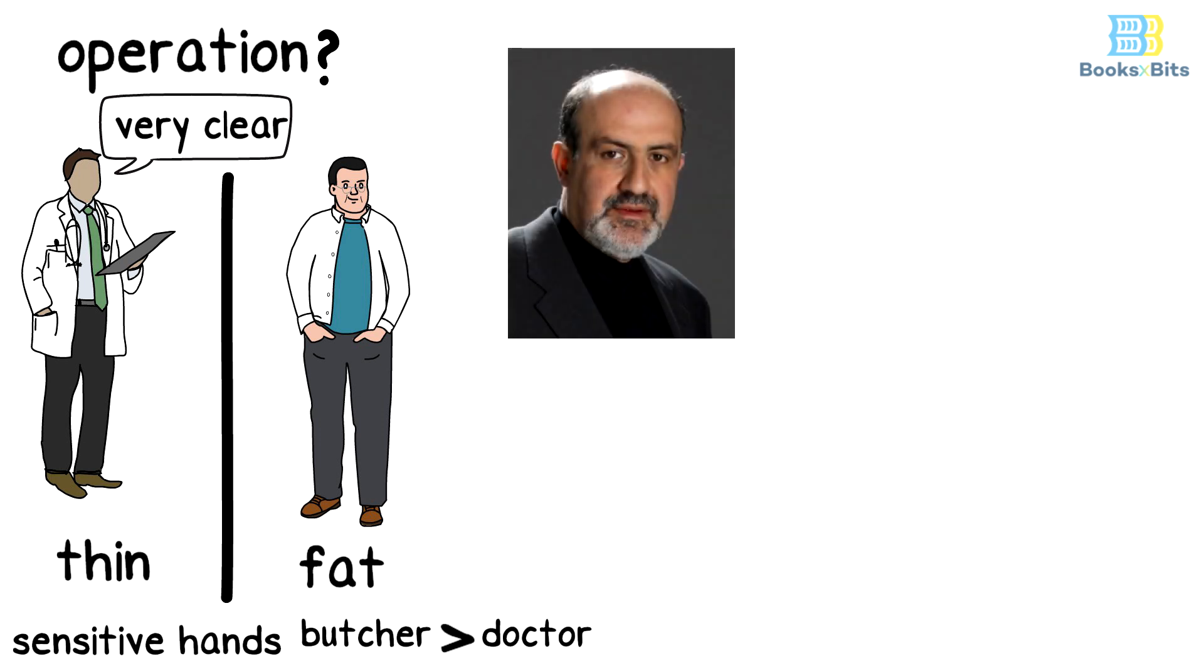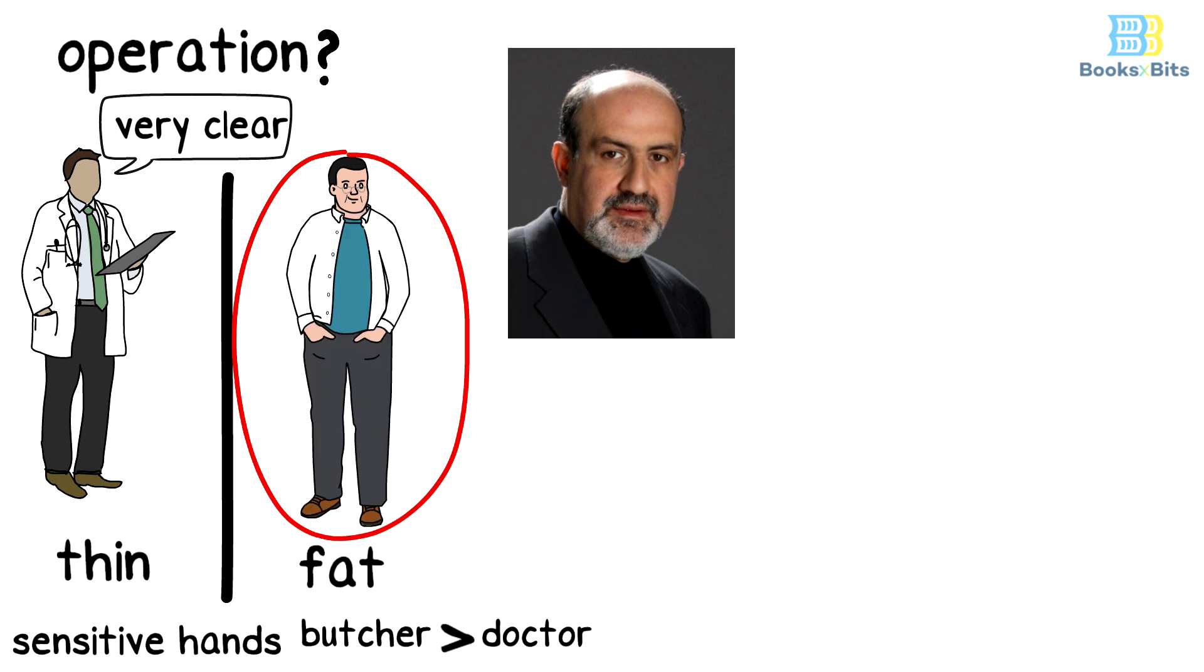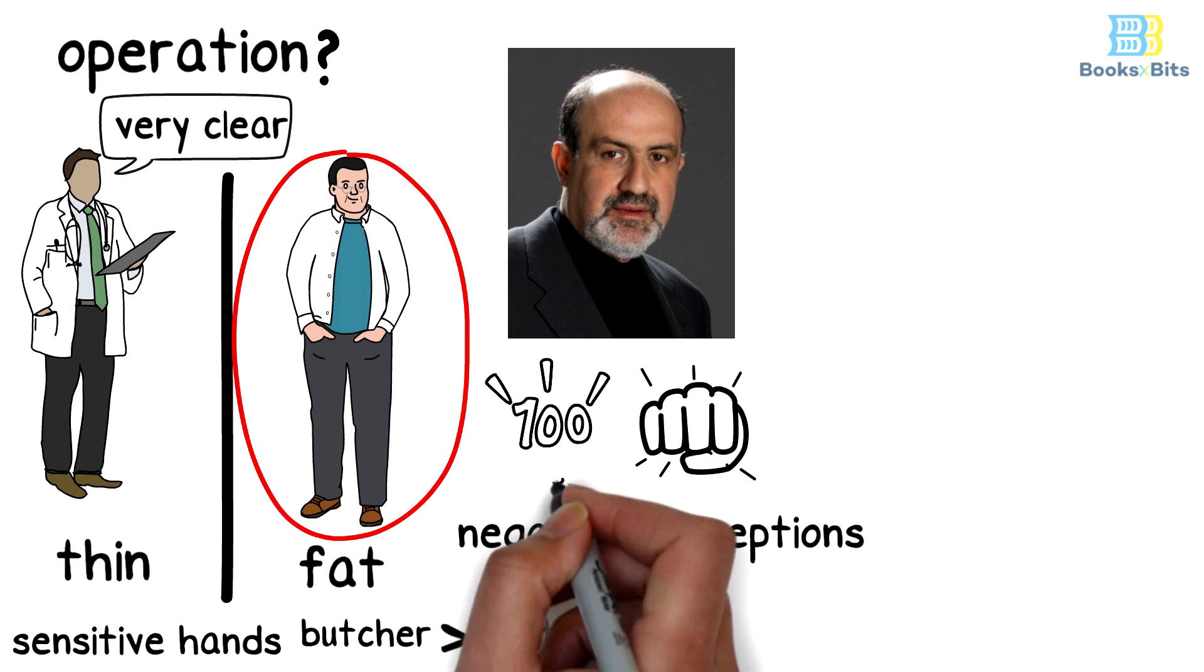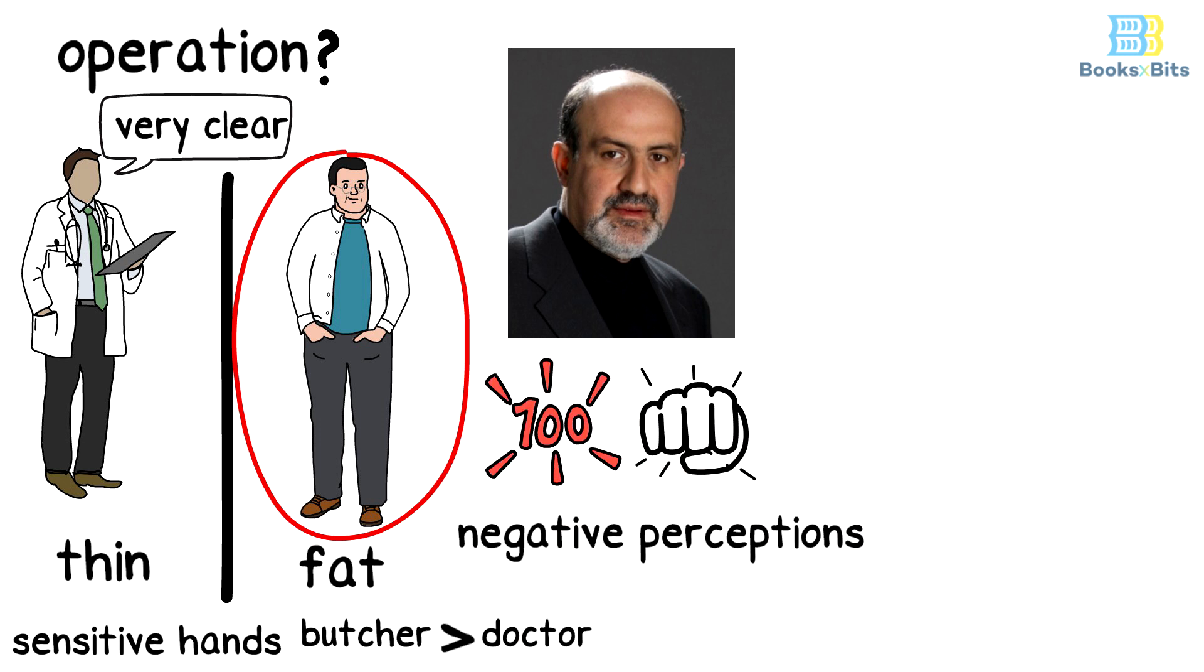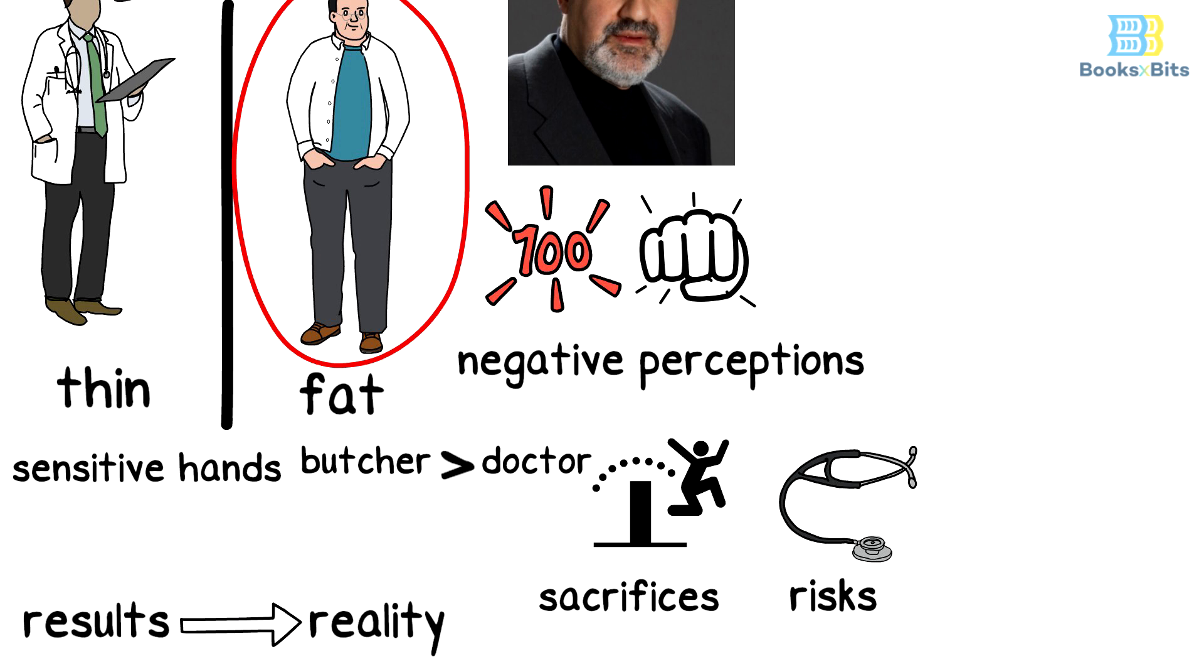The writer Nassim Talib says he will choose the second surgeon. Despite his unfamiliar appearance, he certainly had to overcome a lot of negative perceptions in order to succeed in his career. Perhaps he had to overcome many obstacles to prove himself, unlike a surgeon who looks more like a familiar surgeon. The medical profession is one of the professions that require a lot of sacrifices and risks to overcome obstacles and achieve success. So results in it depend on reality, and efficiency always stands above appearances.